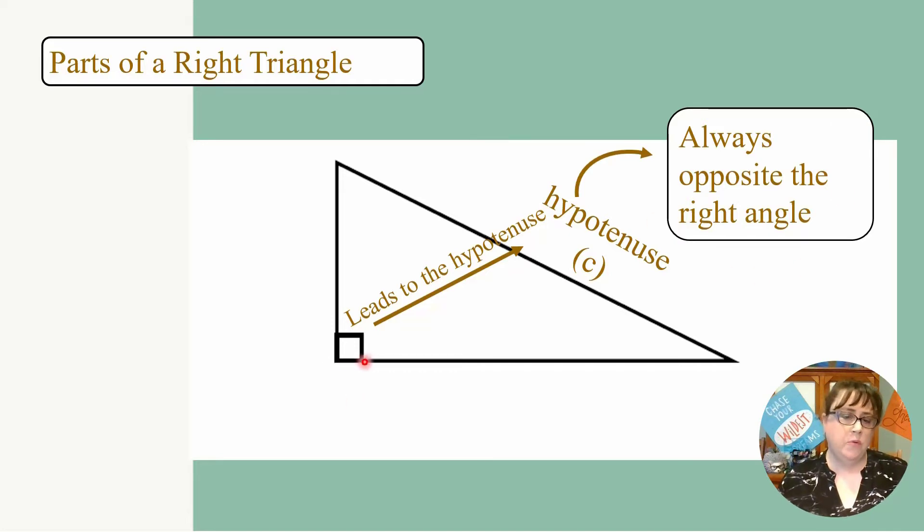Start with your right triangle, go across, and label that your hypotenuse. We're going to label it with the variable C. And then the other two sides are called legs. You can label those A and B. It doesn't matter which one's A and which one's B. It's interchangeable, but they are both called the legs.